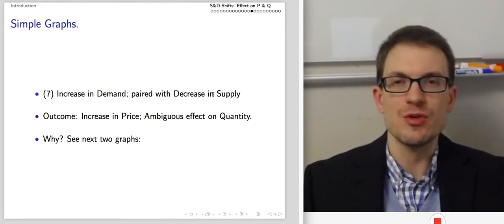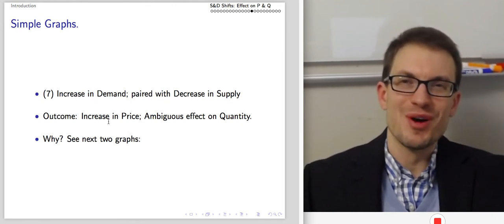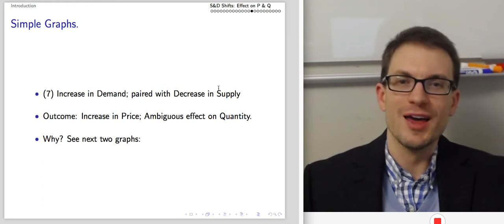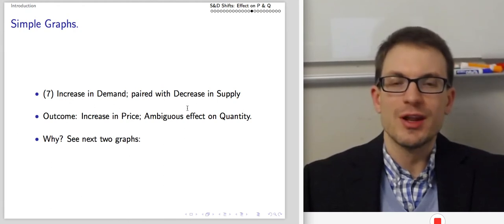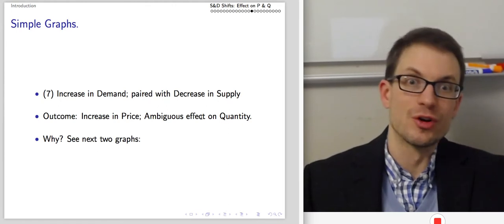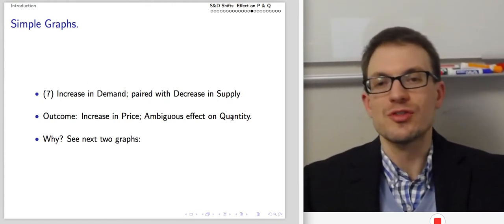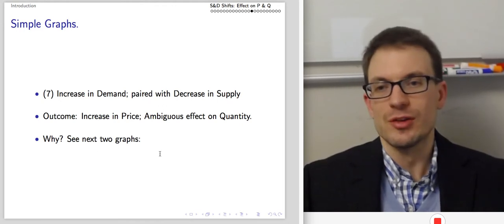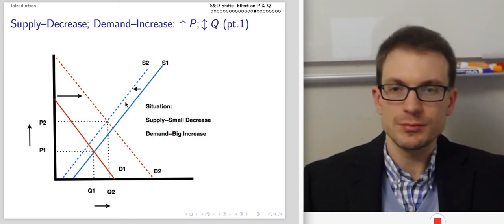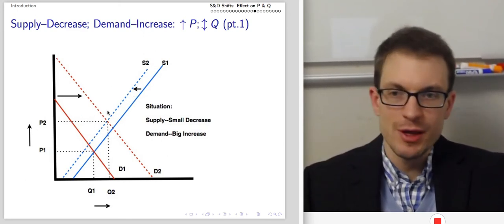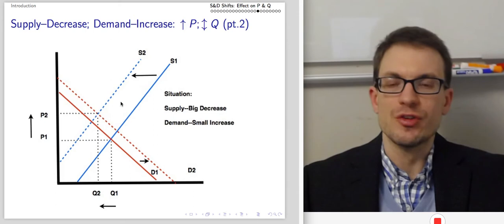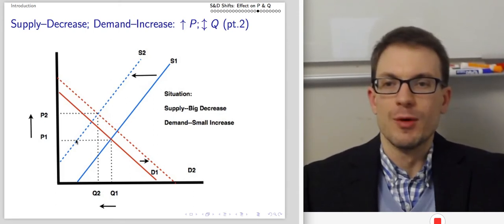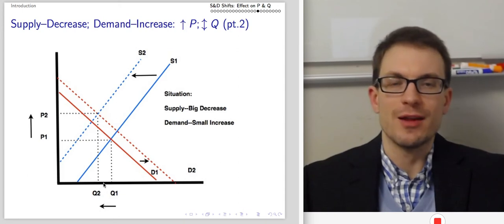Suppose we have an increase in demand and a decrease in supply. The increase in demand tends toward a price increase because people are more interested in buying the good. The decrease in supply makes the good more scarce — both are a recipe for an increase in price. The effect on quantity is ambiguous: the decrease in supply means fewer goods to be traded, while the increase in demand means more interest in buying a large quantity. If we get a small leftward shift to supply but a big rightward shift to demand, price and quantity both get pushed up. But if we get a small increase in demand and a big decrease in supply, price still rises strongly while quantity actually decreases.